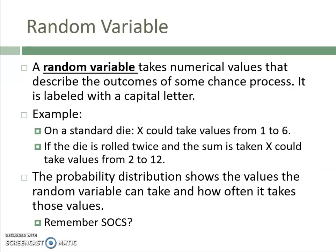Now what is a random variable? A random variable takes numerical values that describe the outcomes of some chance process. It is often labeled with a capital letter — typically we use X, but you can call it whatever you want. For example, on a standard die, X could take the values 1 to 6 because those are the numerical values that describe the outcome of rolling a die.